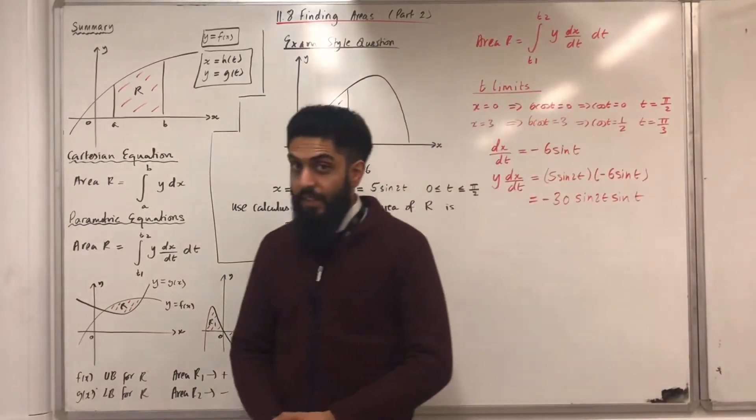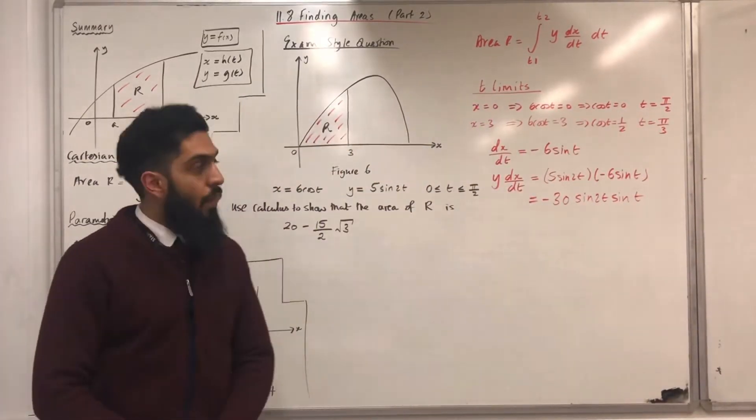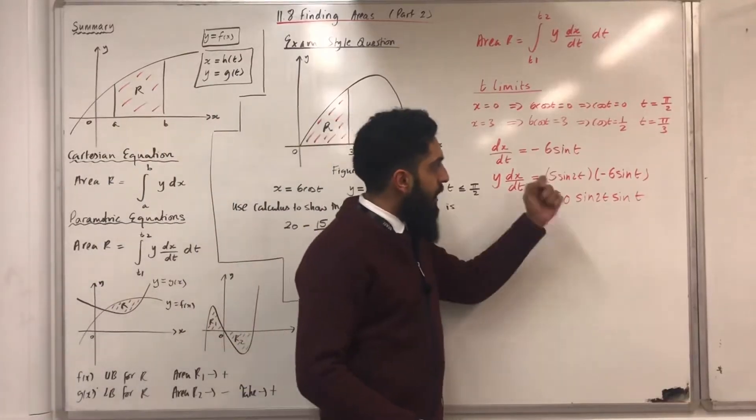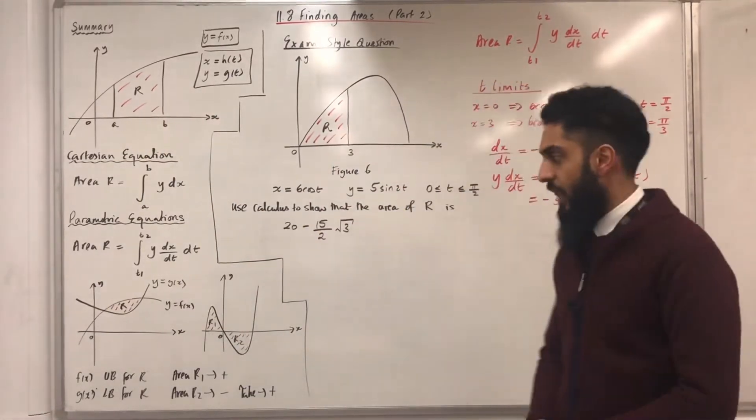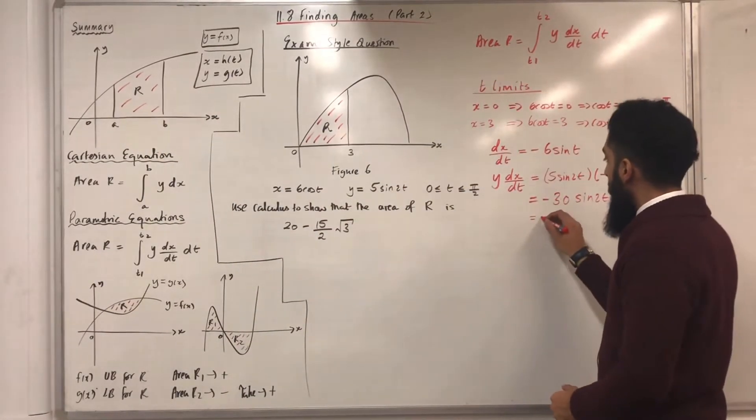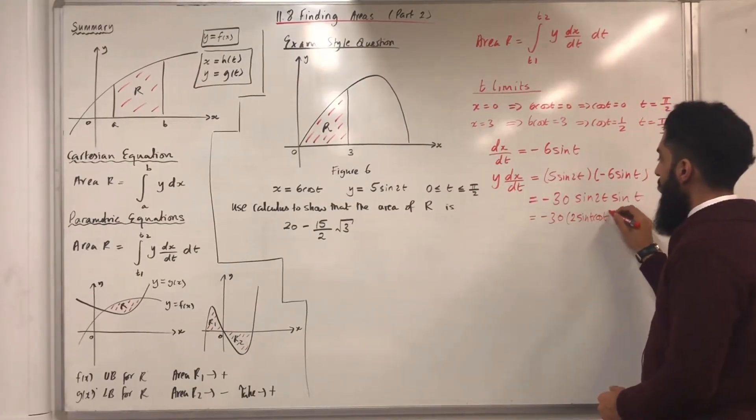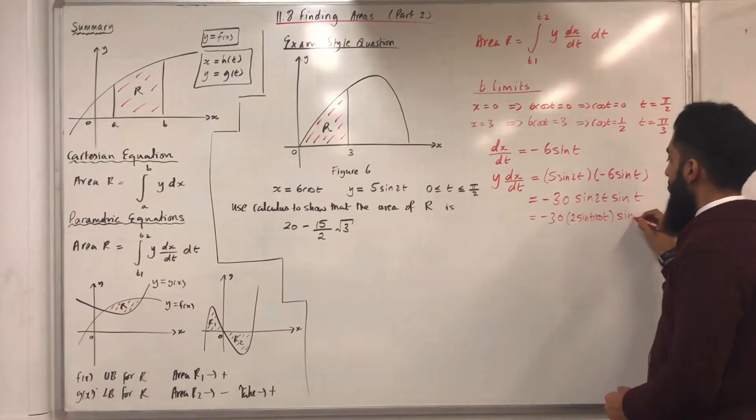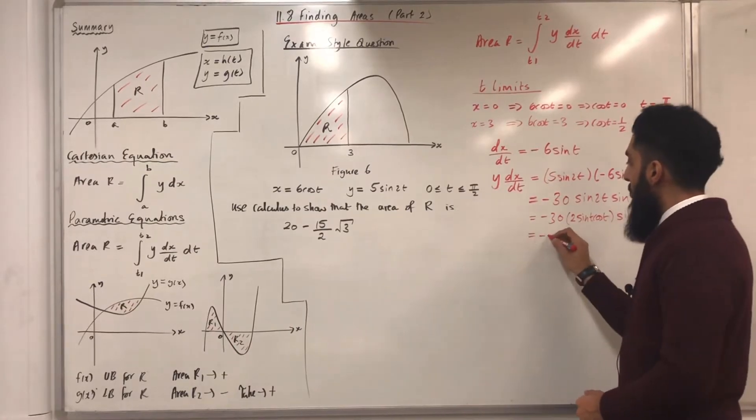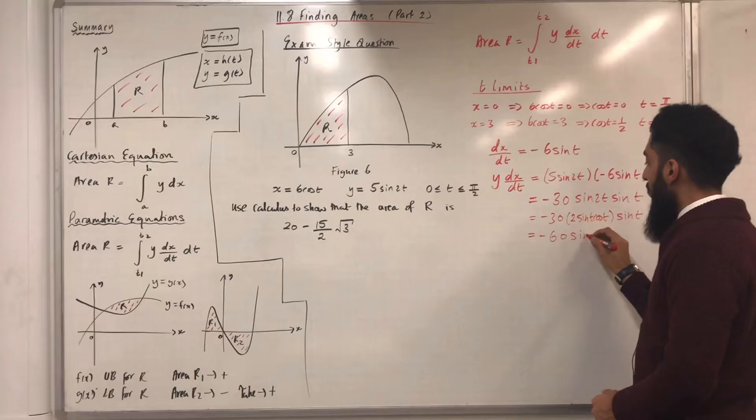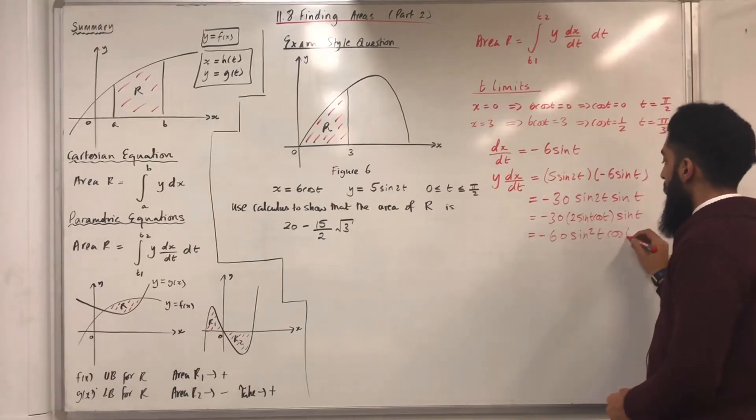I can take it a step further. I can use a double angle formula for sine to split the sin 2t into 2 sin t cos t. So, I can write minus 30 multiplied by 2 sin t cos t multiplied by sin t, to give me minus 60 sin squared t cos t.